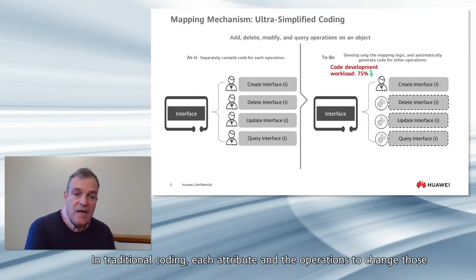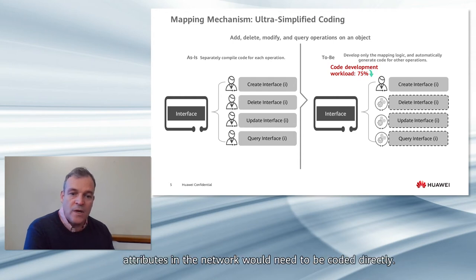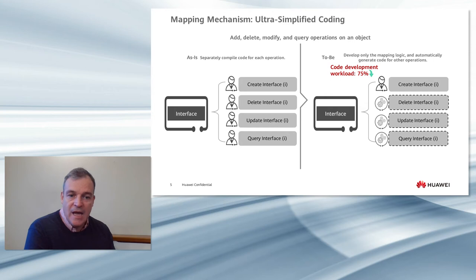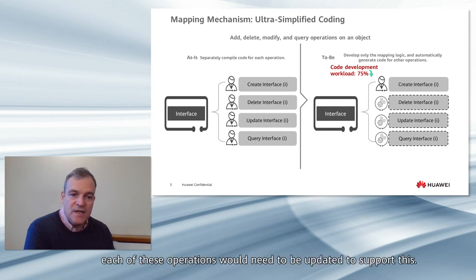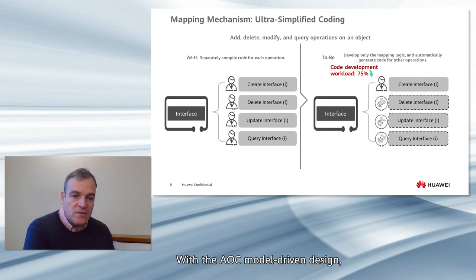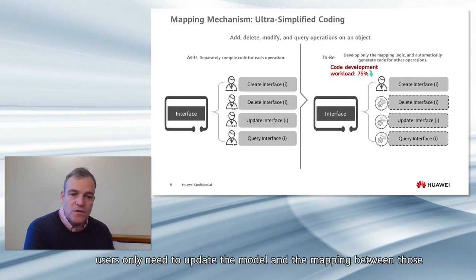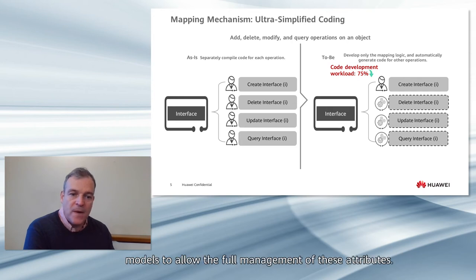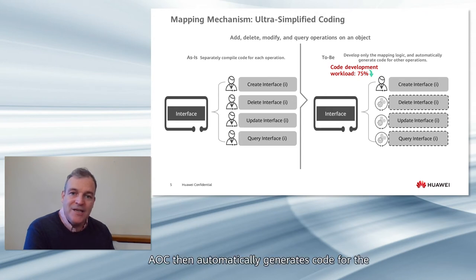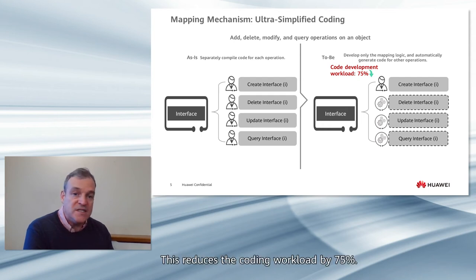In traditional coding, each attribute and the operations to change those attributes in the network would need to be coded directly. If a new attribute or feature was added, each of these operations would need to be updated to support this. With the AOC model-driven design, users only need to update the model and the mapping between those models to allow the full management of these attributes. AOC then automatically generates code for the delete, modify, and query operations. This reduces the coding workload by 75%.